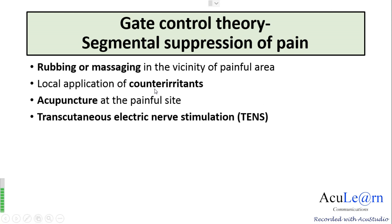Local application of counter irritants and acupuncture at the painful site also act in a similar way as touching the painful area. Transcutaneous electrical nerve stimulation (TENS) places electrodes at the pain site and also stimulates the A-beta fibers. This is how we explain the segmental suppression of pain.